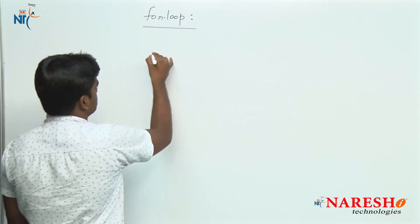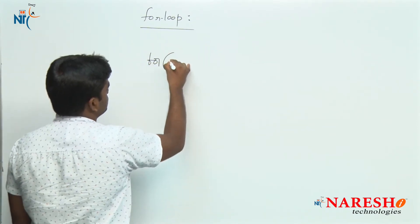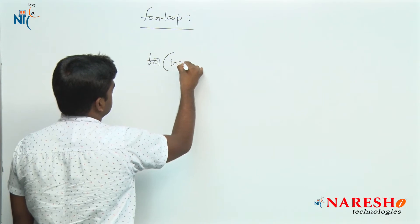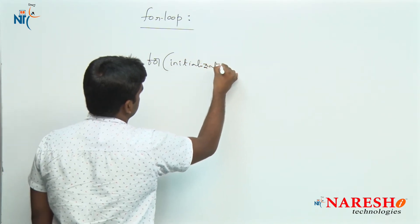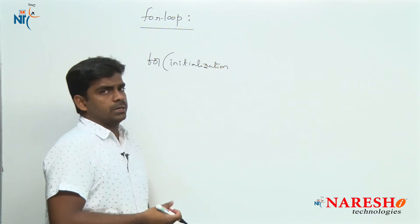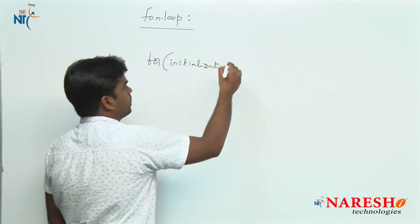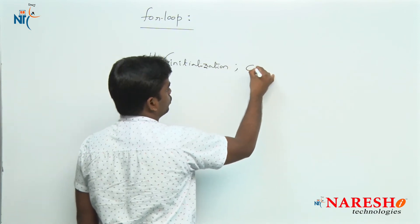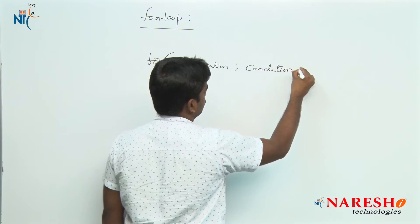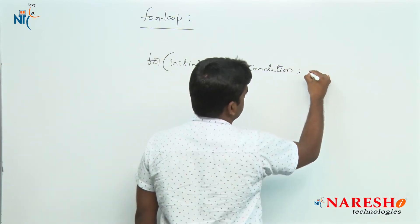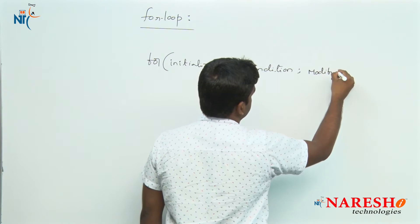In a for loop, first we need to write an initialization statement. Initialization means something like i equals to 1 or i equals to 0. That is initialization, followed by the condition — as long as it has to repeat the loop — and next is the modify, which is nothing but increment and decrement.